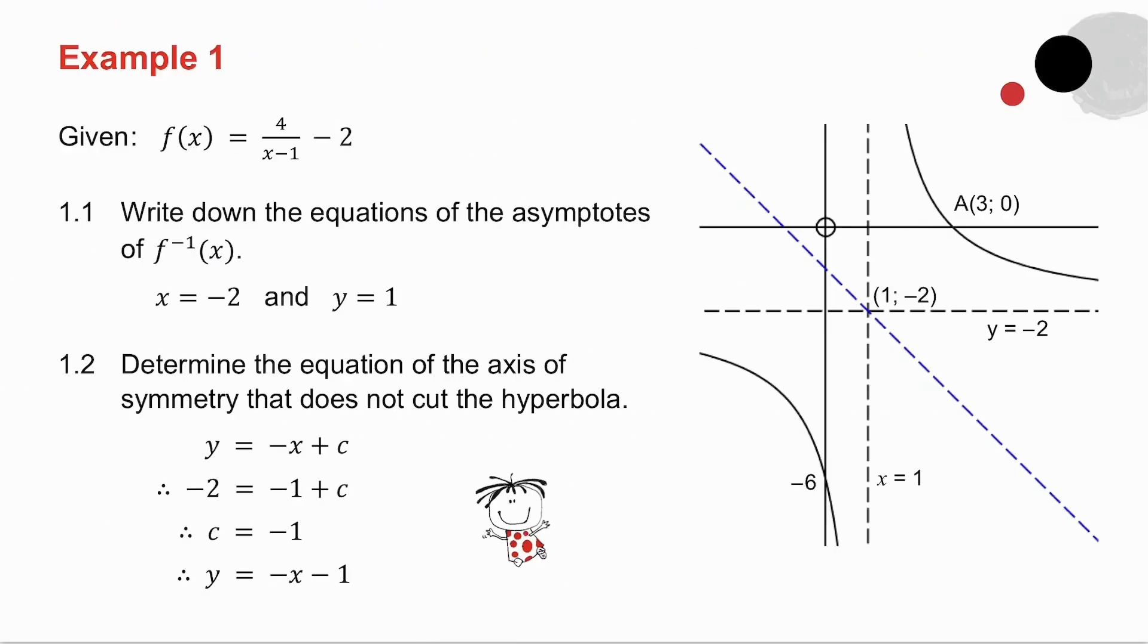Question 1.1 asks you for the equations of the asymptotes of the inverse. So what you've got to do is take the original, the asymptotes are y equals minus 2 and x equals 1. Now remember what happens with an inverse, the x and the y values swap around. So if the asymptote was y equals minus 2, then in the inverse, the asymptote will be x equals minus 2. In f(x), there was my other asymptote at x equals 1. So in the inverse, the asymptote will be at y equals 1.